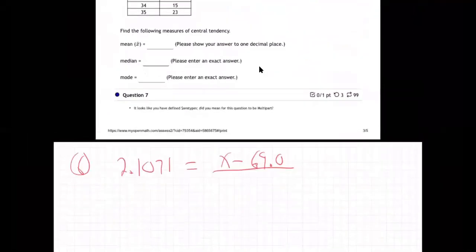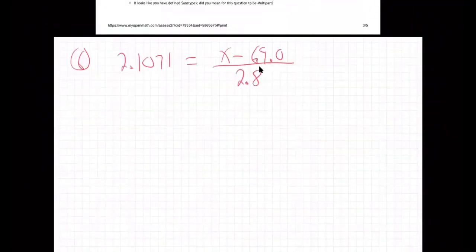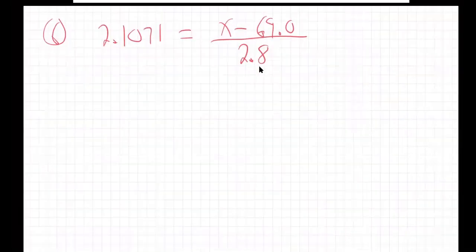2.1071 equals x minus 69.0 over 2.8. All right, so I just bring it down here where we have a little bit more room. And now I need to solve that equation for x. How do you solve that equation for x? Well, first you multiply by the denominator.